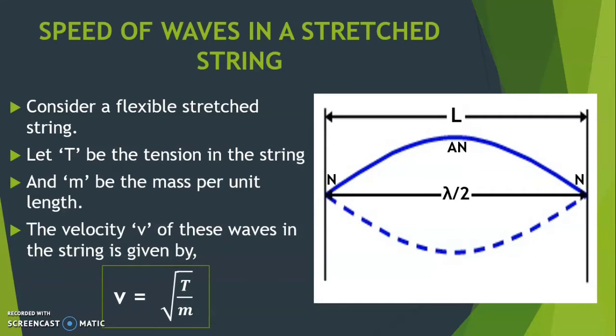These waves are reflected at both ends of the string. Then, the incident waves and reflected waves superimpose producing stationary waves. In the stationary pattern, nodes are formed at the fixed ends and antinodes are formed in the middle.